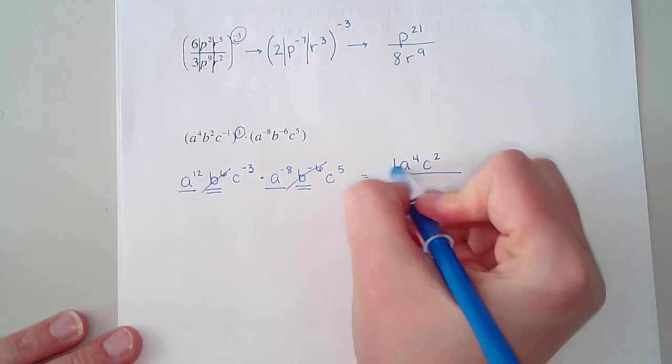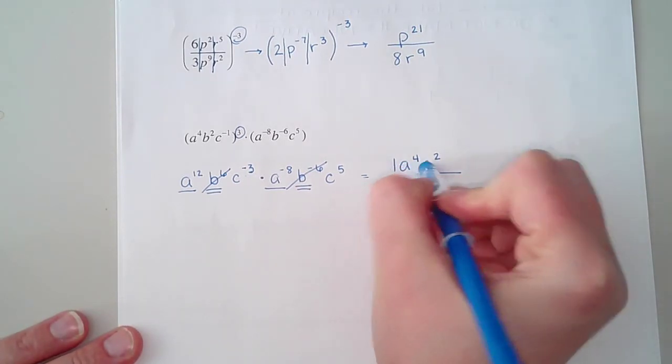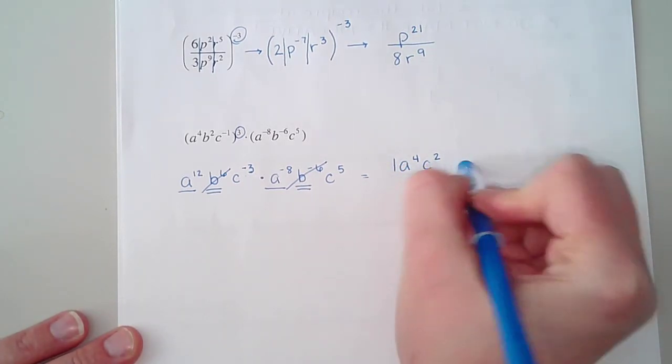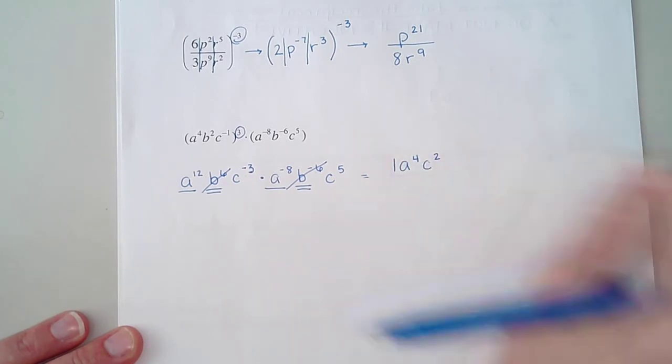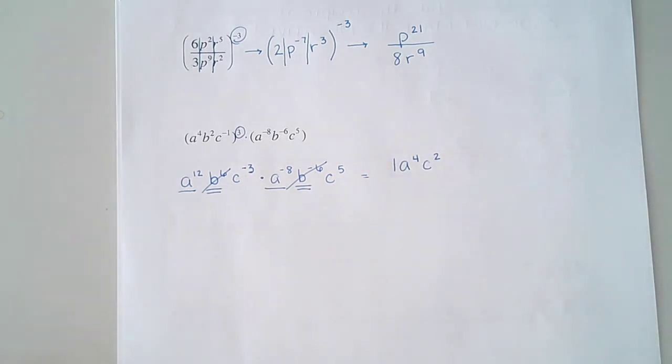This one doesn't have a denominator. There's no bottom to this fraction, so I don't even really need that fraction bar. This thing is just my answer: a to the 4th, c squared. If any of those powers had come out negative at the end of the problem, then I would have put those values down on the bottom of the fraction like we did before. But because they all came out positive, or they canceled out altogether, that's just where I would leave my answer.